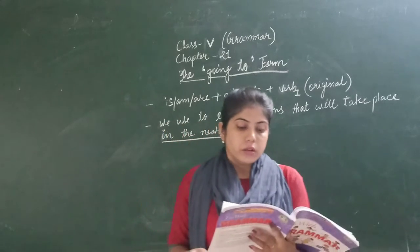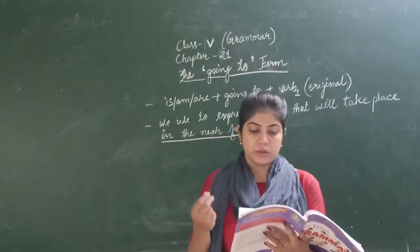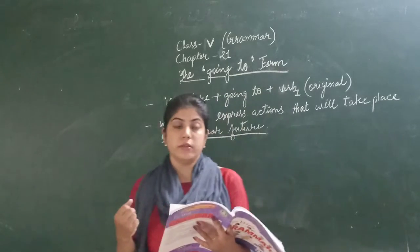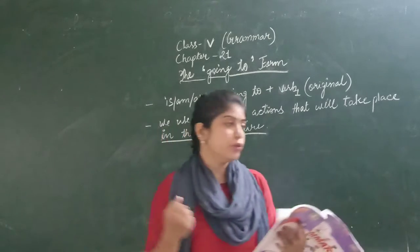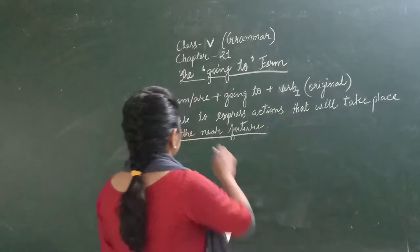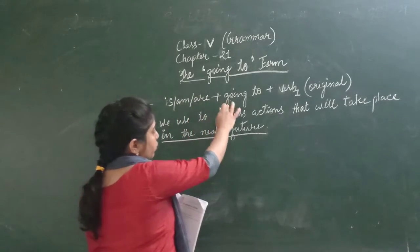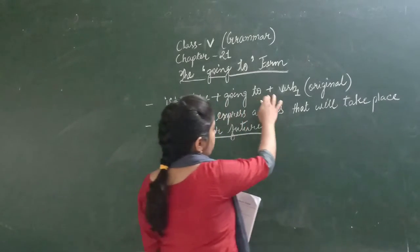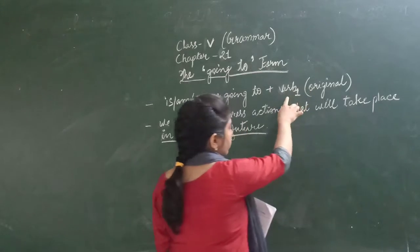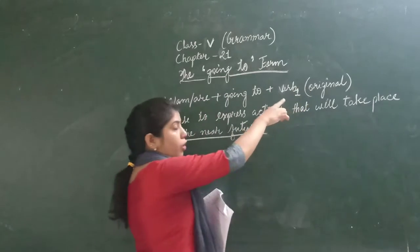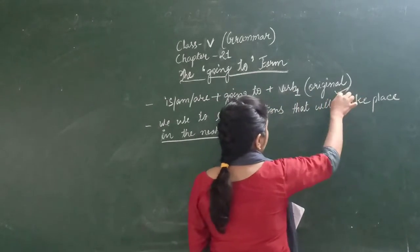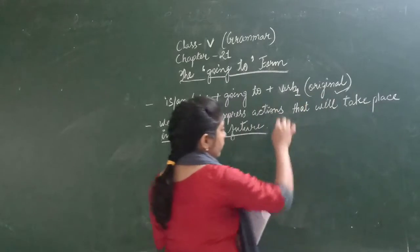So the going to form verb — how it is used. We use is or are, plus going to, plus the verb. Here the verb means the original form of the verb.